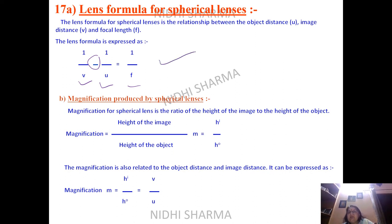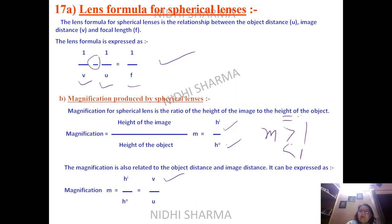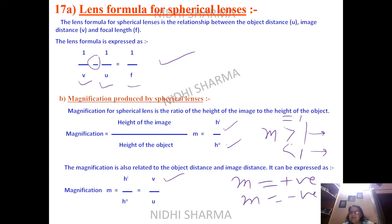For magnification, M = height of image / height of object = V/U. In the mirror formula it was negative V/U, but in the lens formula it is positive V/U. If M > 1, image is bigger; if M < 1, image is smaller; if M = 1, same size. If M is positive, the image is virtual and erect; if M is negative, the image is real and inverted.